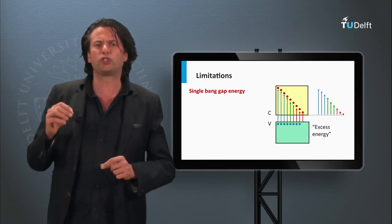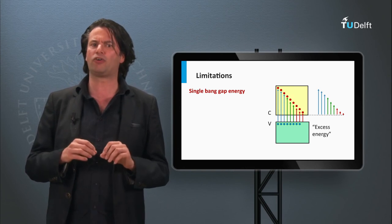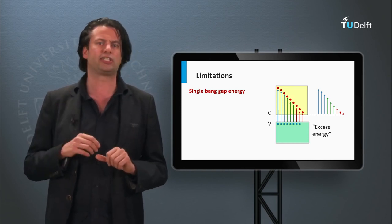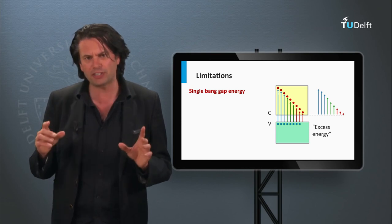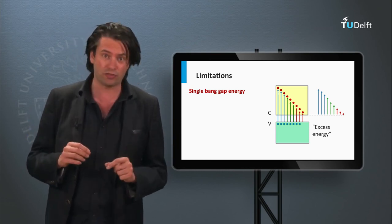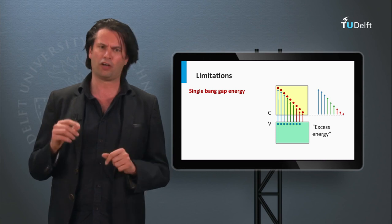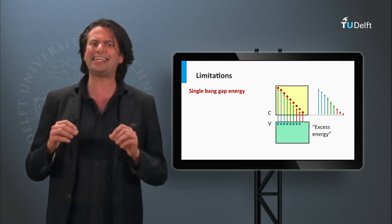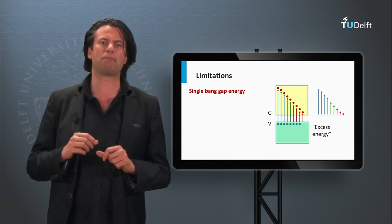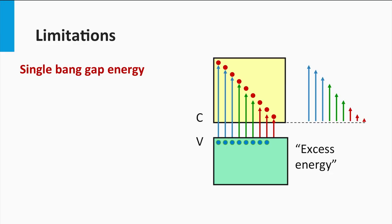Now we are going to look at a very fundamental limitation of the photovoltaic effect as we have discussed it so far. What physical principles are limiting the extent of photogeneration? First, one problem is that in a single junction only one band gap material is used. A large fraction of the energy in the most energetic photons is lost as heat, as illustrated here. The arrows represent photons with different energies.